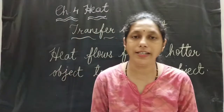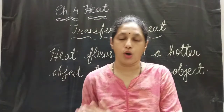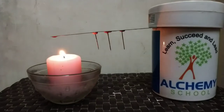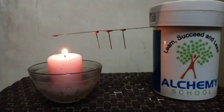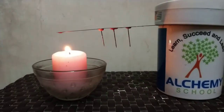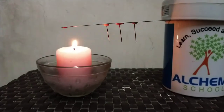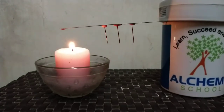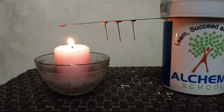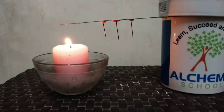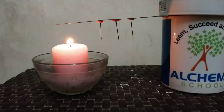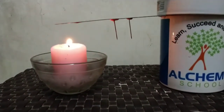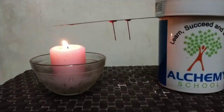We are going to investigate this statement — whether it is correct or not — by doing an experiment. For the experiment, I have taken one metal scale on which I fixed pins using wax at different intervals. You can see how I have arranged the scale and the candle. The candle's heat is given to the scale. As the heat transfers along the scale, moving ahead one by one, the pins will drop.